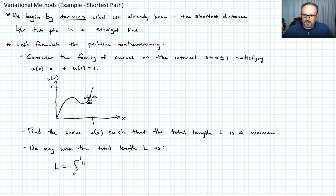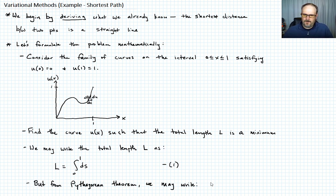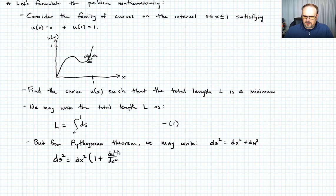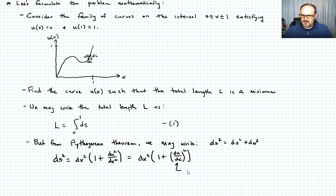The total length L is equal to the integral from 0 to 1 of ds — call that equation 1. Via the Pythagorean theorem, ds squared equals dx squared plus du squared. Factoring out dx squared gives ds squared equals dx squared times (1 plus (du/dx) squared), where du/dx is just u prime — call that equation 2.